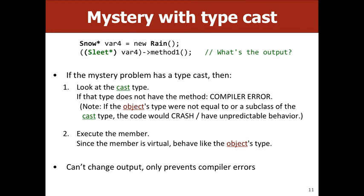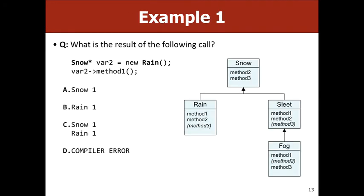Let's do some examples. We have Snow* pointing to new Rain, and we want to call method1. Our declared type is snow, our initialized type is rain. Does snow have a method1? No. So what happens? Compiler error.